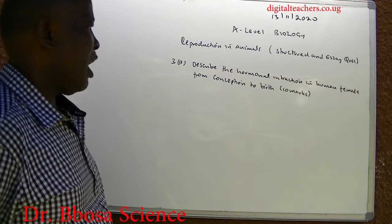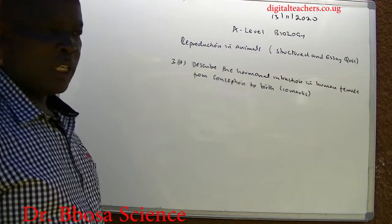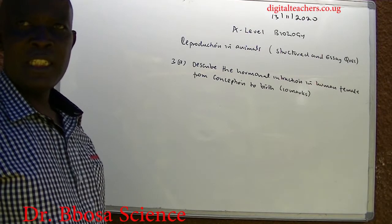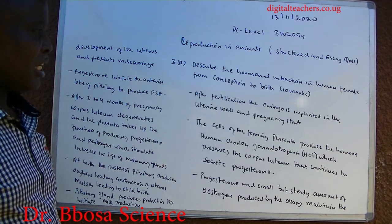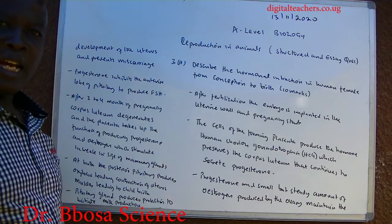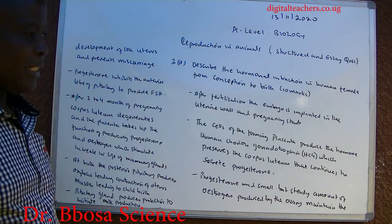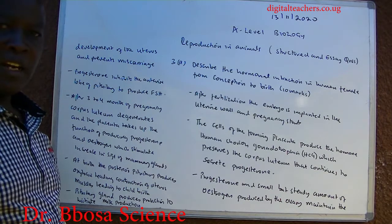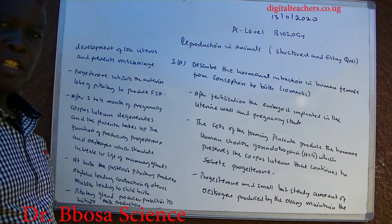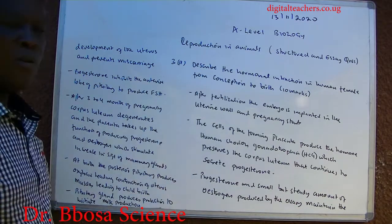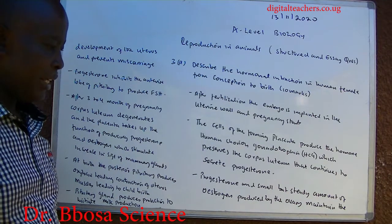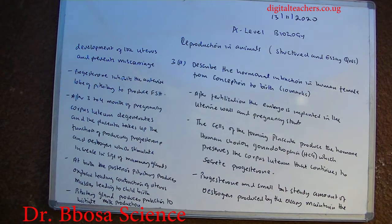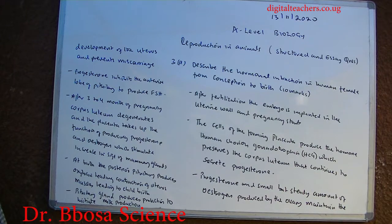Three: describe the hormonal interaction in the human female from conception to birth. Ten marks. After fertilization, the embryo is implanted in the uterus wall and pregnancy starts. The cells forming the placenta produce a hormone, human chorionic gonadotrophin (HCG), which preserves the corpus luteum that continues to secrete progesterone. Progesterone and small amounts of oestrogen produced by the ovaries maintain the development of the uterus and prevent miscarriage. Progesterone inhibits the anterior lobe of the pituitary to produce follicle stimulating hormone, preventing another pregnancy.